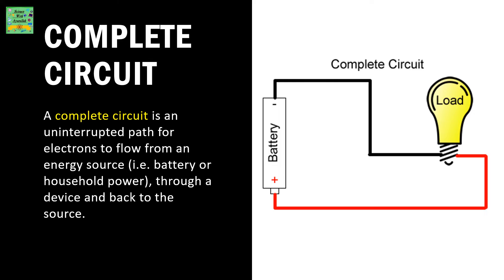Complete circuit. A complete circuit is an uninterrupted path for electrons to flow from an energy source, i.e., battery or household power, through a device and back to the source.